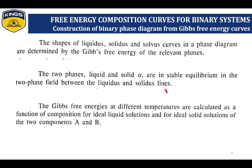A free energy composition curve for binary systems is explained by Gibbs free energy curve. The shape of liquidus, solidus, and solvus curves in a phase diagram are determined by the Gibbs free energy of relevant phases. The two phases, liquid and solid, are in stable equilibrium between the fields of the liquidus and solidus lines. The free energy at different temperatures is calculated as a function of composition for ideal liquid solution and ideal solution of two components A and B.